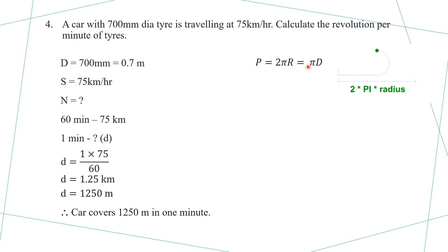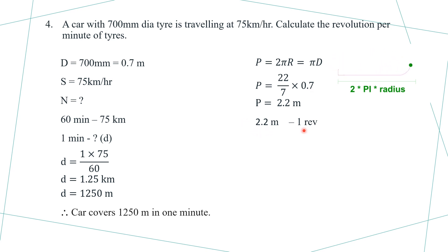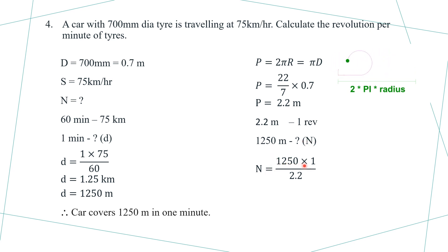The perimeter is P equals 22 by 7 into 0.7, which equals 2.2 meters. So 2.2 meters equals one revolution. The car covers 1250 meters in one minute. Therefore, revolutions per minute equals 1250 divided by 2.2, which gives approximately 568 RPM. This means the tire makes 568 revolutions per minute.